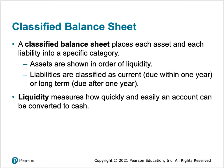When assets are shown in order of liquidity, liquidity is a measure of how quickly and easily an asset can be converted to cash. The easier or quicker it can be converted, the earlier it appears on the balance sheet, and the more long-term items appear at the bottom.